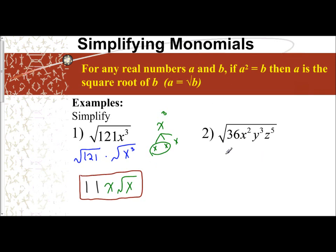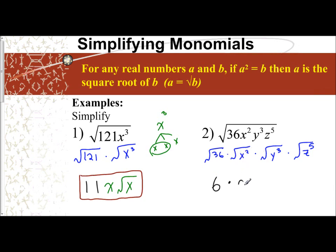For the next problem, I'm going to break it apart to the square root of 36 times the square root of x squared, breaking each variable into its own radical — so now I have y cubed and square root of z to the fifth. The square root of 36 is 6. The square root of x squared is x. x squared means you have two x's, so you have one pair. When I had an exponent of 2, I had one pair, so I was able to take out an x, but nothing remains inside.